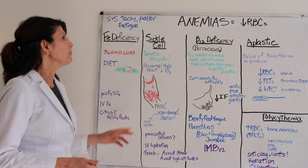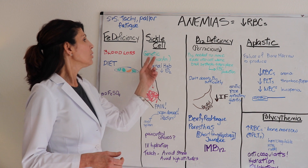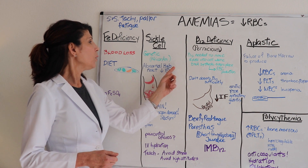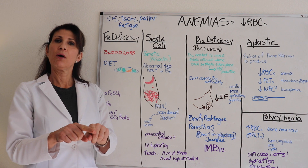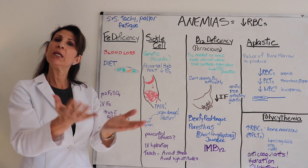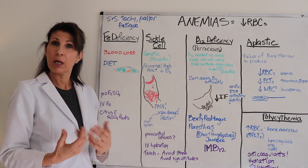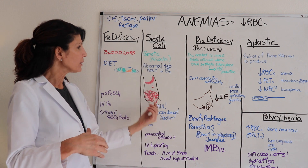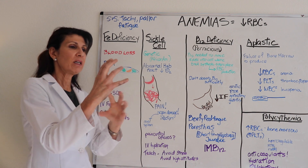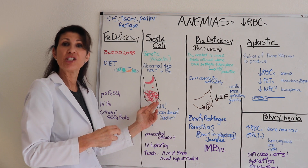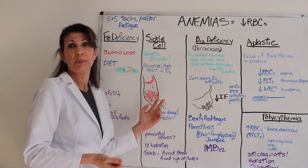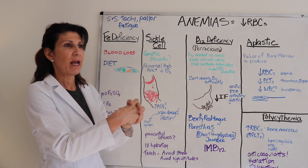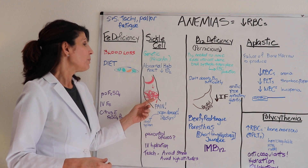Sickle cell anemia is inherited — it has a familial trait and a very high incidence in the African-American population. Instead of the red blood cell being round and fluffy, in states of lower oxygen tension they sickle, forming an abnormal hemoglobin. These sickled cells can't float freely through the intravascular space; they bump into other cells, get lodged, and cause even more diminished oxygenation — a vicious cycle of sickling, clumping, deoxygenation, and more sickling.